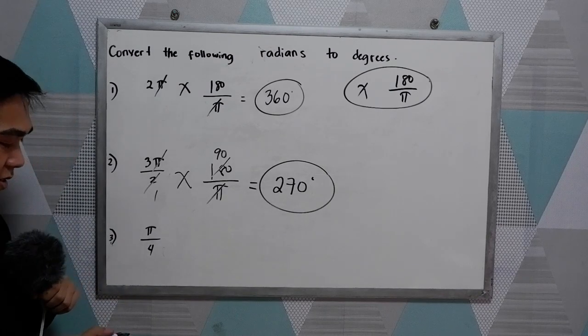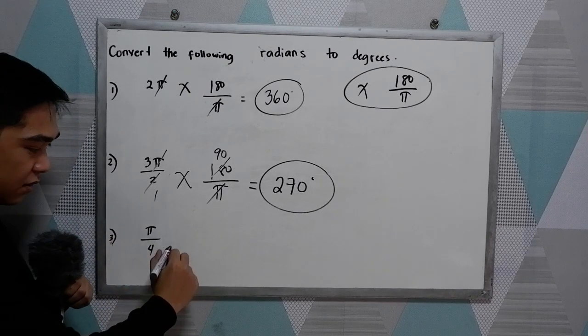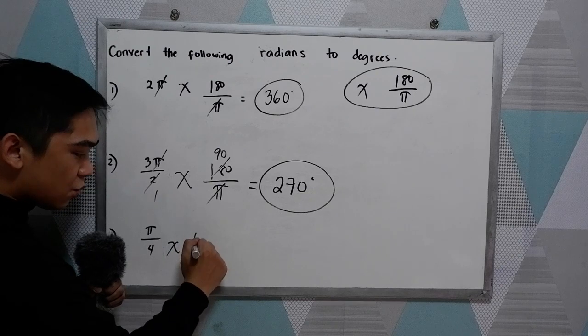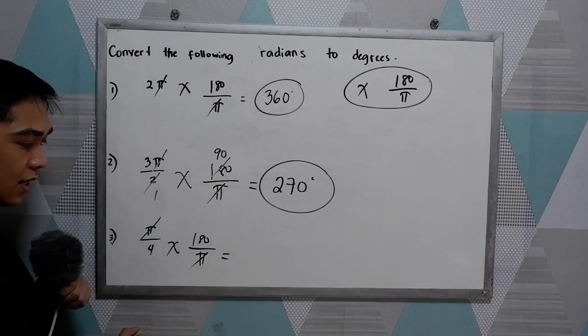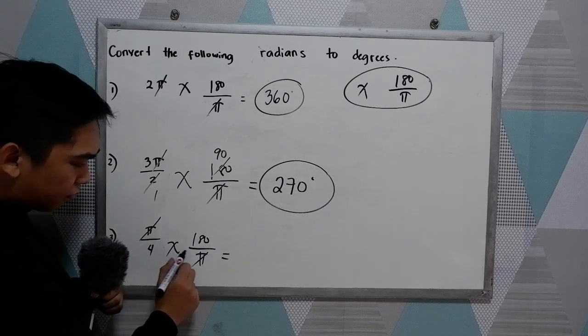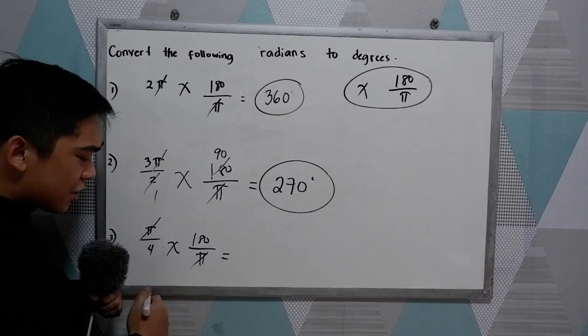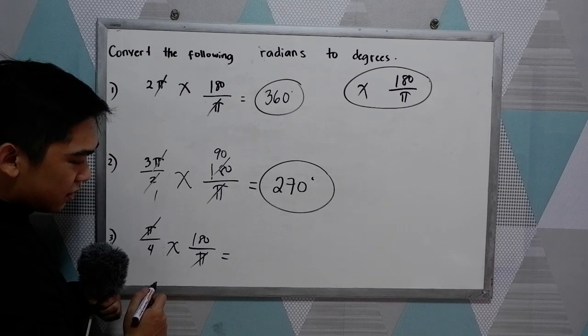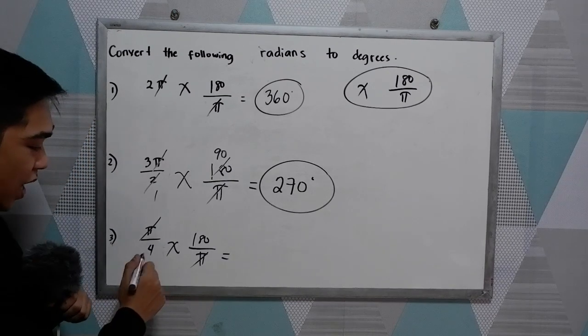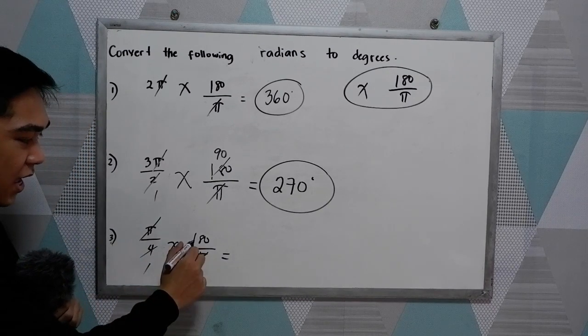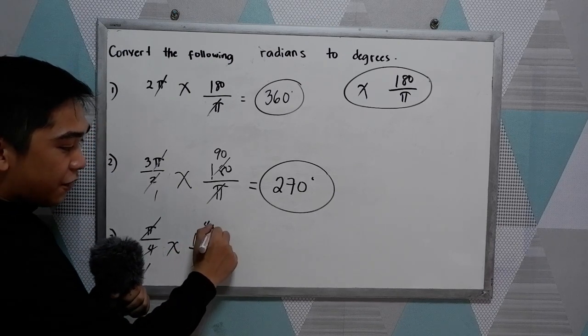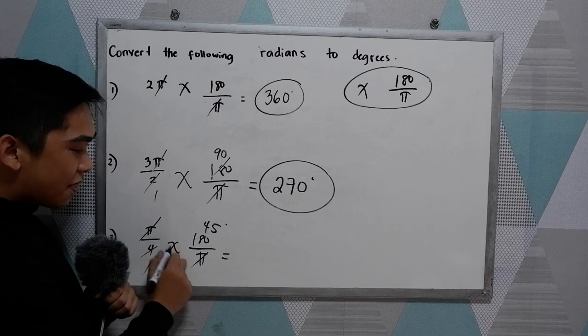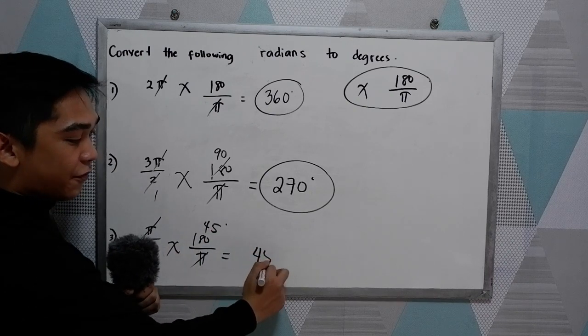And last, pi over 4. Same step, multiply it by 180 over pi. So cancel pi. Now 180 and 4 divisible by 4, so we have 1. Then 180 divided by 4, that is 45. So 1 times 45, so 45 degrees.